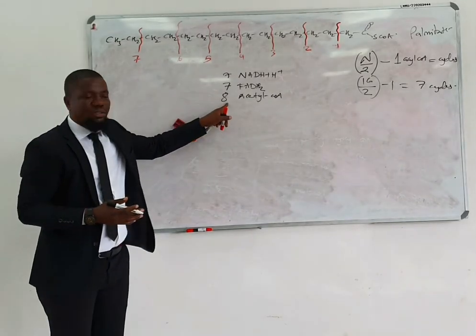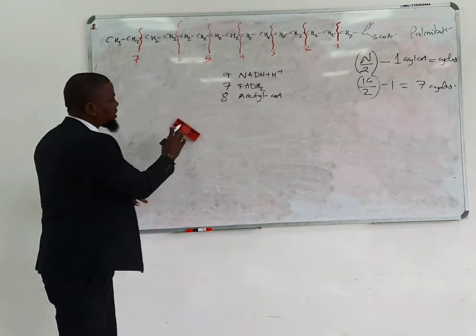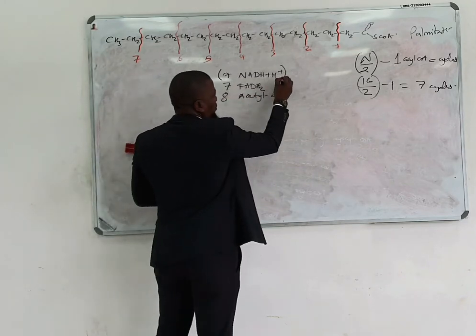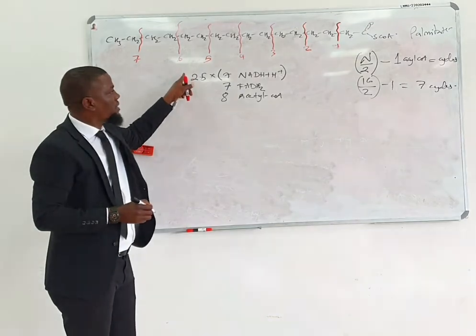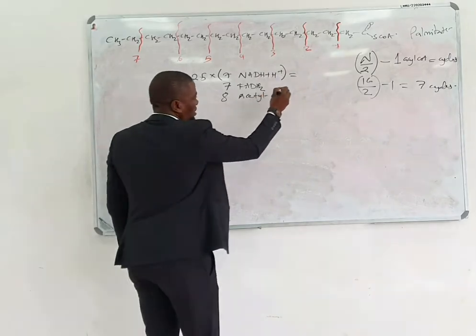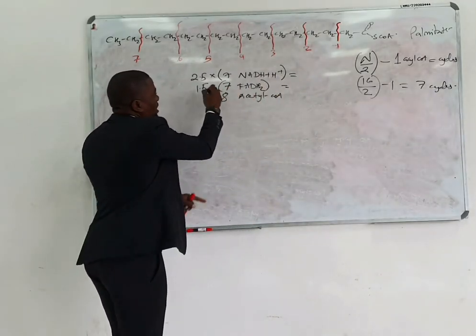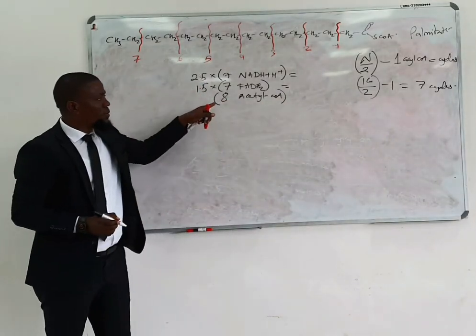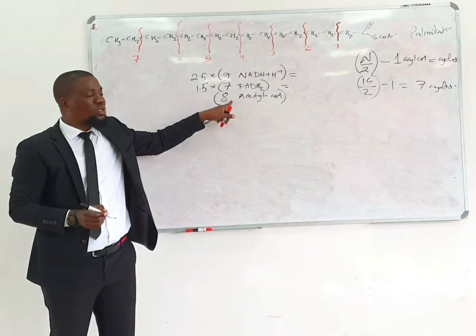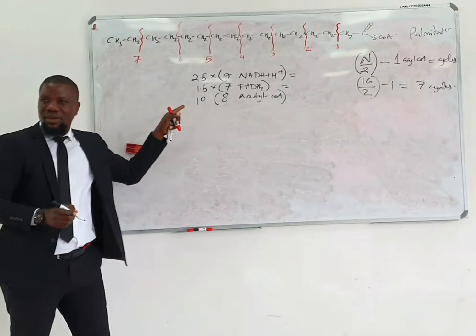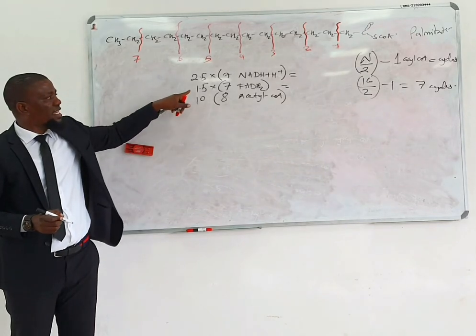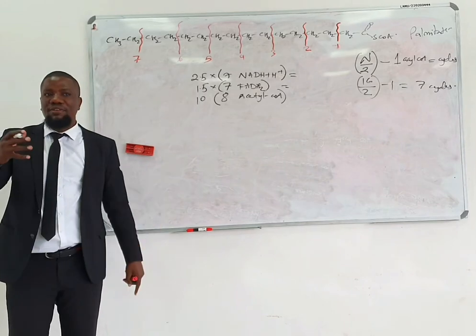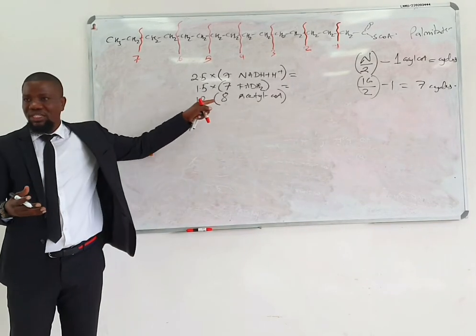This can be calculated using your values for energy from NADH. If NADH gives you 2.5 ATP, then 7 NADH gives 17.5 ATP. FADH2 gives 1.5 ATP, so 7 FADH2 gives 10.5 ATP. From the TCA cycle, each acetyl-CoA produces 10 ATP when using the 2.5 and 1.5 values. If you use 3 and 2 it gives 12, but with 2.5 and 1.5 it is 10.